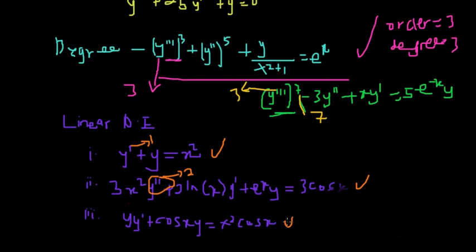The third example is not a linear differential equation. Even though it has a dependent variable with first order, we can notice that the dependent variable is multiplied by another y, and also the dependent variable is multiplied by a trigonometric function, cos(x). So the first two examples are linear differential equations, but the third one is not.